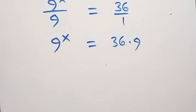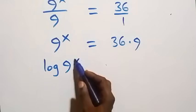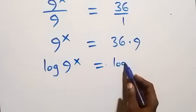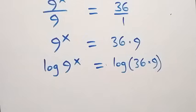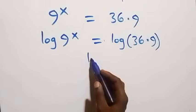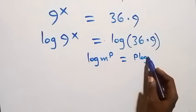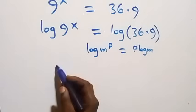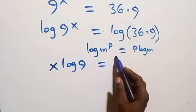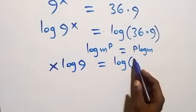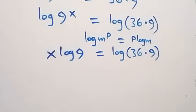Our next step: we take the log on both sides, and we have log 9 raised to power x equals to log of 36 times 9. From the power rule of logarithms, when we have log m raised to power p, this is the same as p log m. So this becomes x log 9.